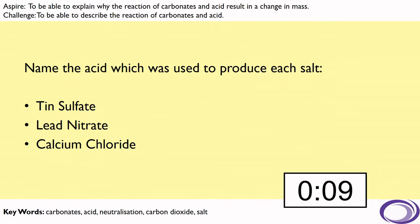Now, before we get started, I'd just like a little recap from our previous lessons and I'd like you to name the acid which would be used to produce each of these salts: tin sulfate, lead nitrate, and calcium chloride.